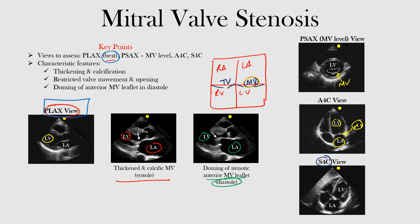The last view to assess is the subcostal four chamber view. You have the left ventricle and left atrium here — remember, the liver is here — and then your right atrium and right ventricle. We're focusing on the left side of the heart where the mitral valve is located. You're assessing the same things: thickening, calcification, and restricted movement and opening of that valve.